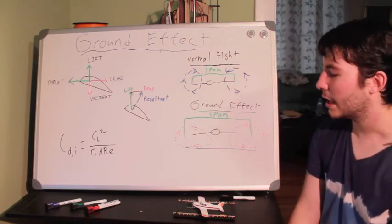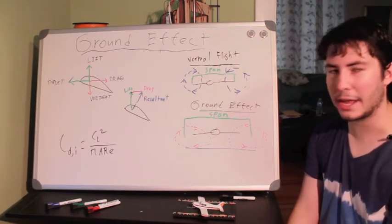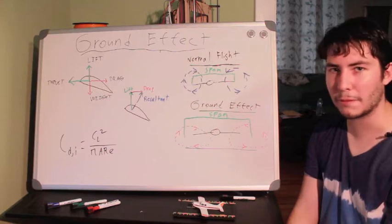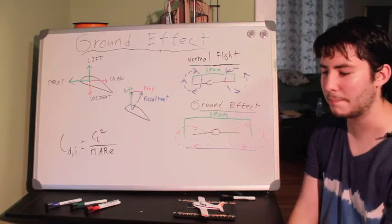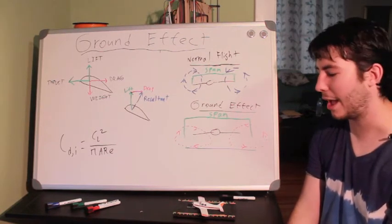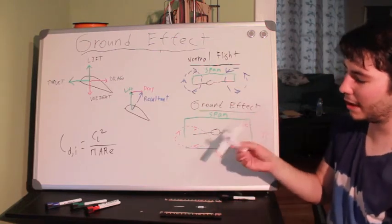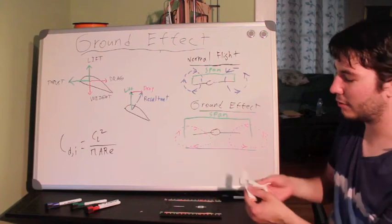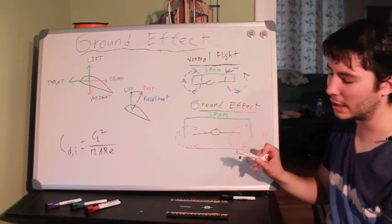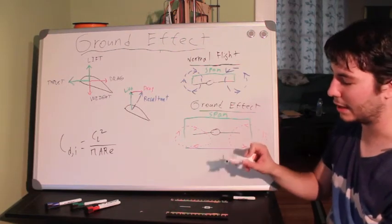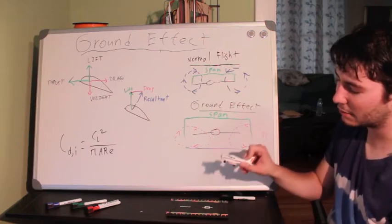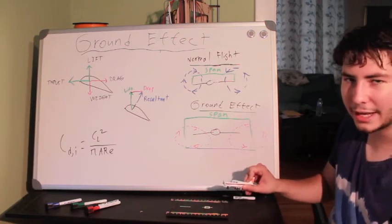So ground effect is best described as an area of increased performance in an aircraft when it's about one wingspan off the ground. So we've got our little model aircraft here. When we're flying at one wingspan off the ground, the pilot's going to get a sense that he's floating almost. It's almost like the aircraft is riding on a cushion of air right as it comes in for landing.